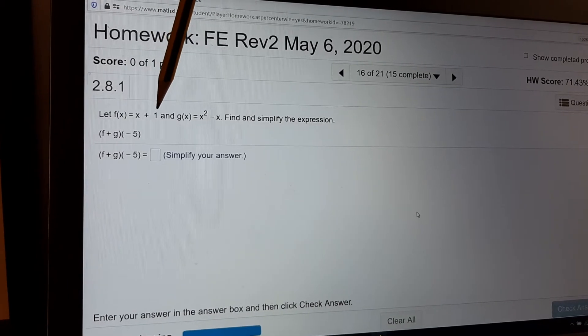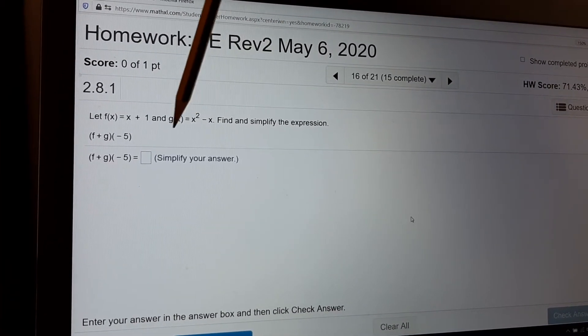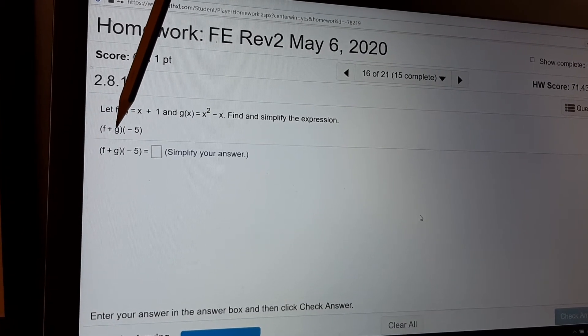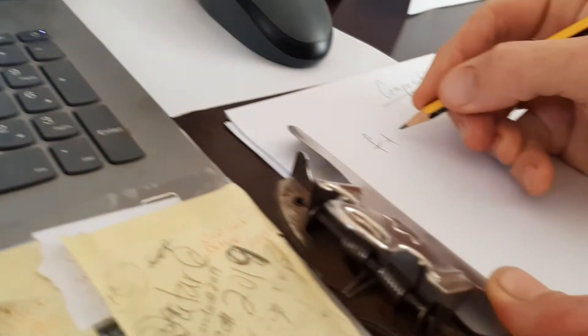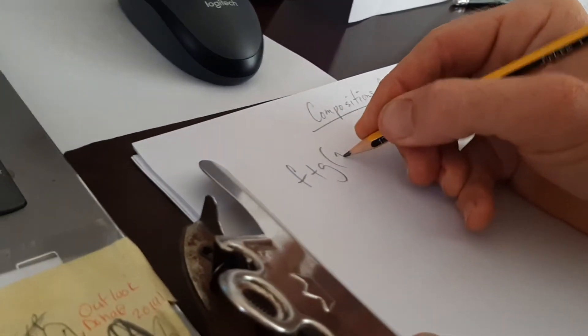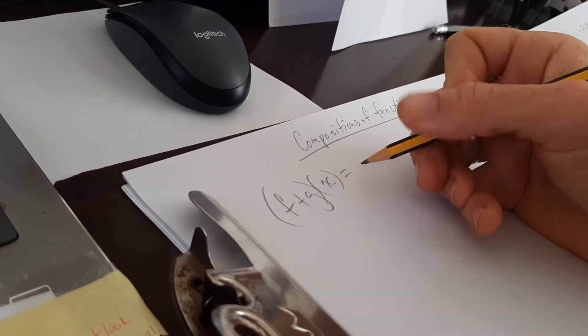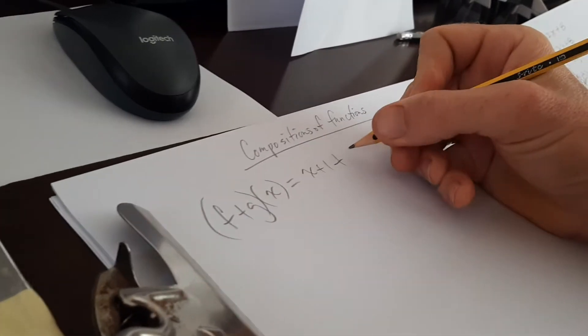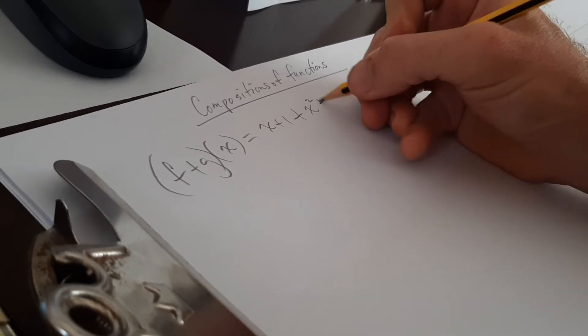f of x equals x plus 1, g of x equals x squared minus x. Find and simplify the expression. What is f plus g of x of minus 5? So f plus g of x, I'm going to add both those together.